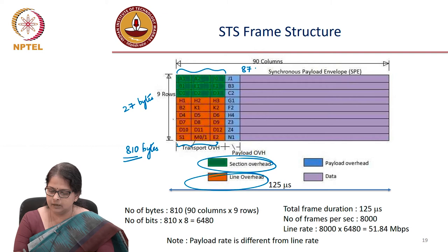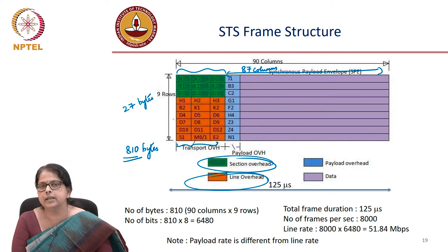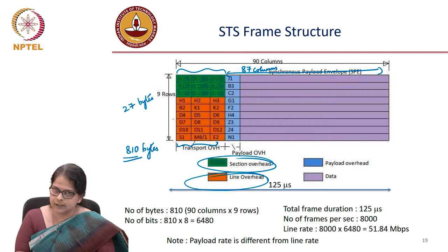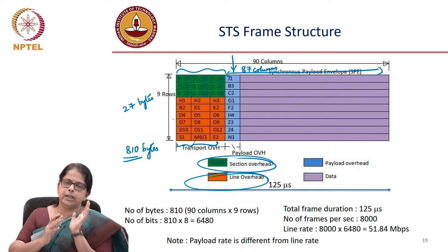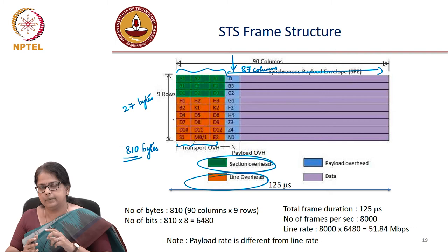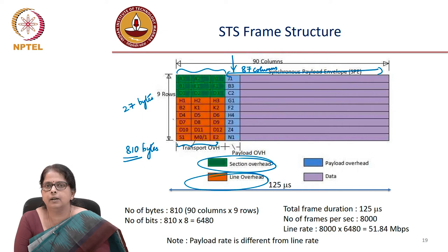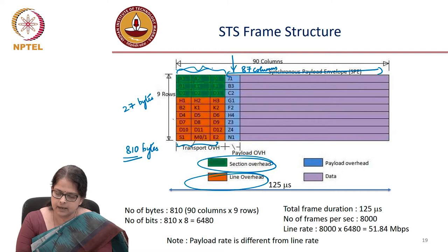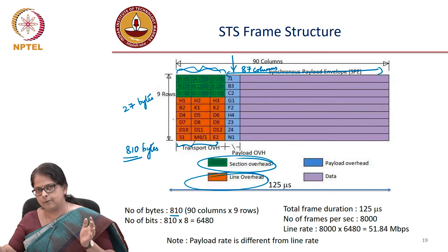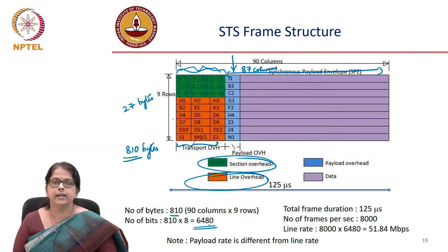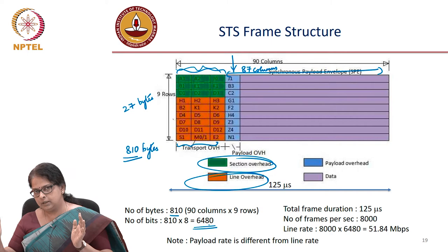The remaining 87 columns carry the payload — the synchronous payload information. Payload means your data, of which the first column in the 87 columns has some address corresponding to the data itself — maybe it will say what modulation is used, what kind of FEC is used, some information about the coding and so on. So the fourth column has information specific to the data you are transporting, whereas the first three columns have information specific to where it has to be routed. Totally you have 810 bytes, and each element can carry one byte, and 1 byte is 8 bits, giving a total of 6480 bits in one STM frame.